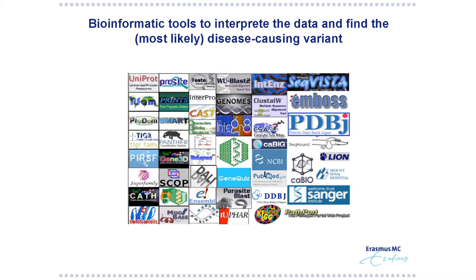And then, if you find a new gene or a new genetic defect in a gene that has not been linked to primary immune deficiency, you really have to do a lot of experiments to show that what you find is really disrupting a certain process and leading to the disease.